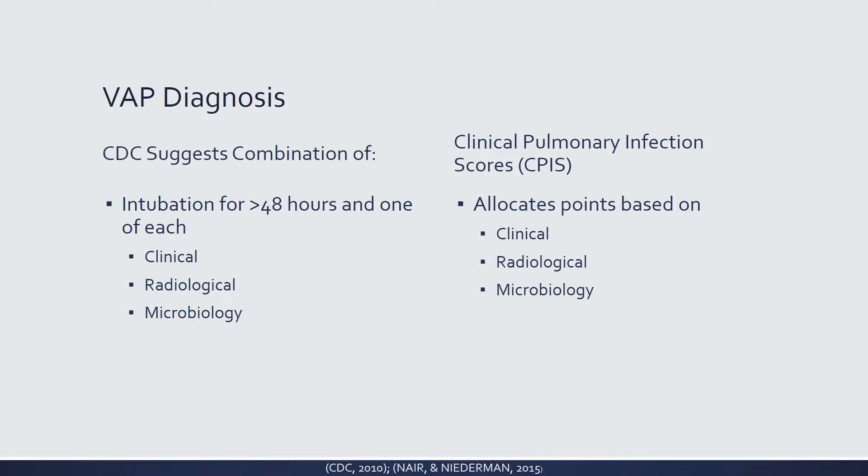The CDC utilizes a point system which requires that a patient be intubated for 48 hours, along with a clinical symptoms severity score based on fever, sputum changes, increased oxygen requirement, radiological signs like a new area of infiltrate on x-ray, and microbiology signs like a positive sputum culture. A similar scoring system is the clinical pulmonary infection score, which also gives points based on symptoms.